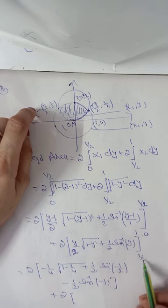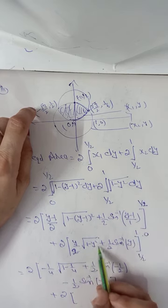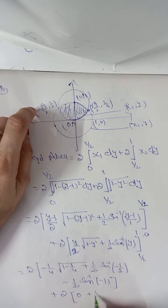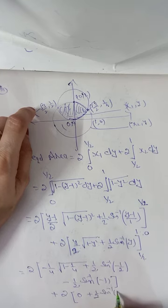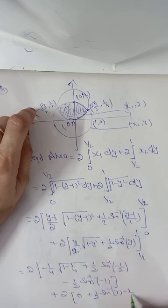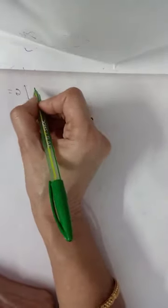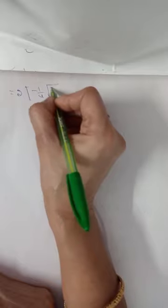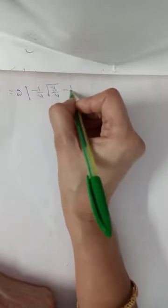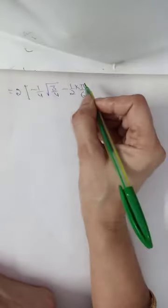For the second integral with limits 1/2 to 1: at upper limit y = 1, the term (1 - 1) = 0 and sin⁻¹(1) = π/2. At lower limit y = 1/2: we get 1/4 · √(1 - 1/4) + 1/2 · sin⁻¹(1/2). So we have twice of [-1/2 · √(3/4) - 1/2 · π/6 ...].